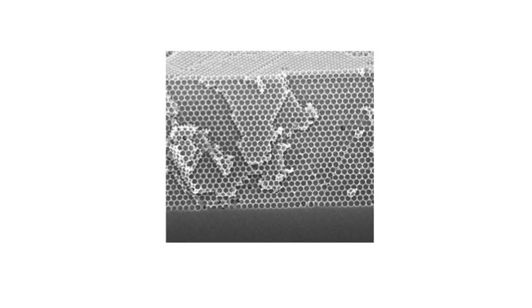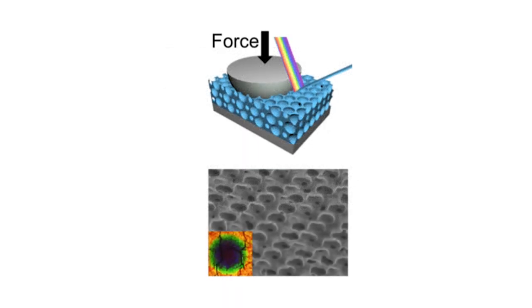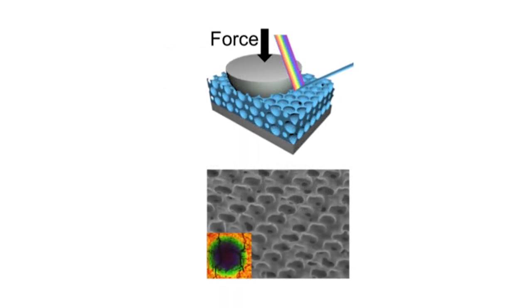They used self-assembling polymers, chains of molecules that bind together under certain conditions to form crystals that produce certain colors. When a force is applied, the internal structure changes, and so does the color.